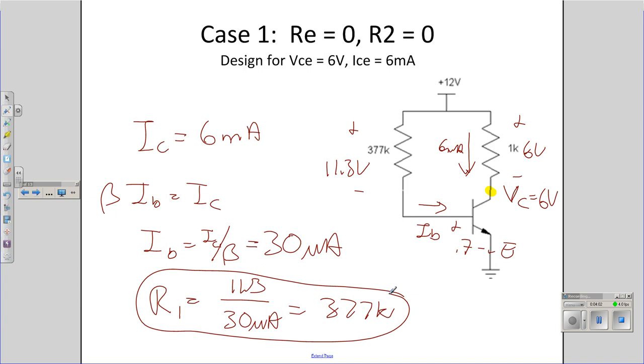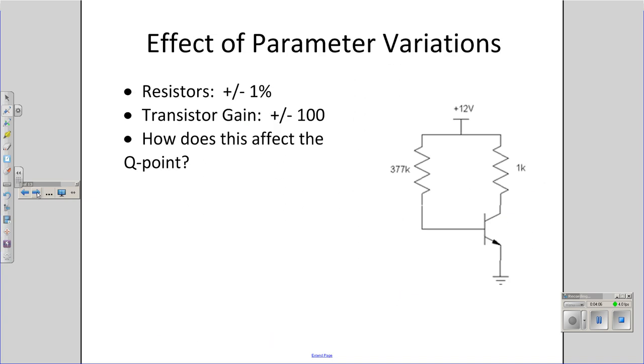That specifies the Q point. Problem with that design. The gain of the transistor, say that's the 2N2222, the gain is somewhere between 100 and 300. Nominally it's 200. That's what I've designed for. Could vary quite a bit. What happens to the Q point if I take into account the variations in beta?